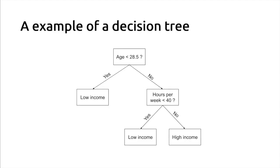In the first notebook, we had a specific example in mind for the income of members of the United States population. By just looking at the data, we could derive a set of decision rules to help us classify people into different groups of income. For instance, we could select the age variable and tell whether or not the person is more than 28.5 years old. If younger, we predict low income. If older, we consider a second variable such as hours per week worked. If lower than 40 hours per week, we predict low income; if higher, high income. This hierarchical structure of decision rules based on one variable at a time is what we call a decision tree in machine learning.